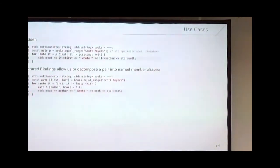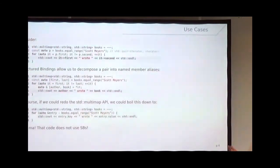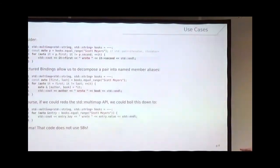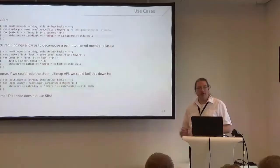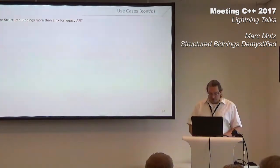But do we need structured bindings to accomplish that? If we could redo the standard map API without worrying about backwards compatibility, equal_range would return something iterable so you could plug it directly into a for loop, and the value type of a map would not be a pair with first and second but some type with key and value members. Key and value are expressive enough to be understood by everyone — and look, it does not use structured bindings.